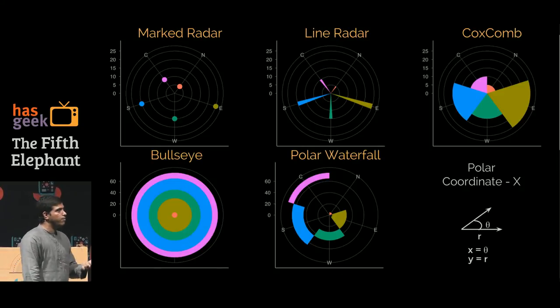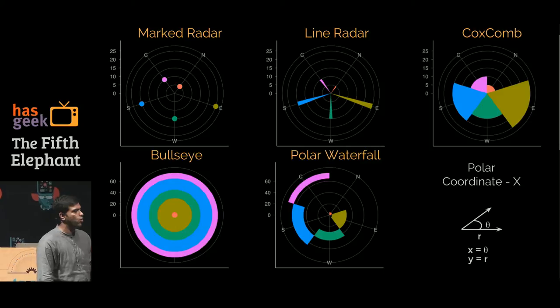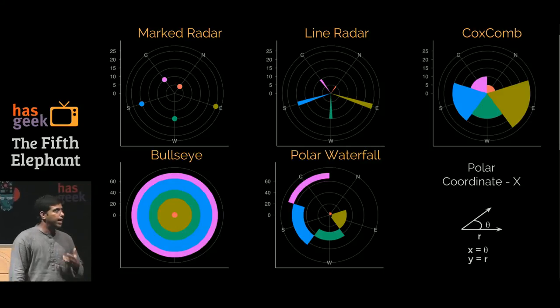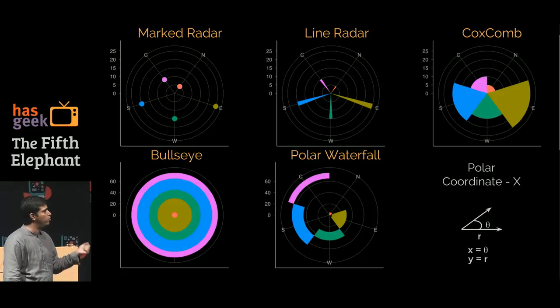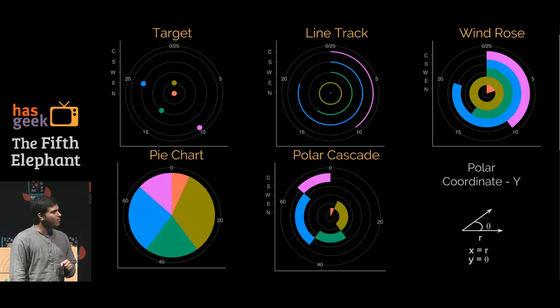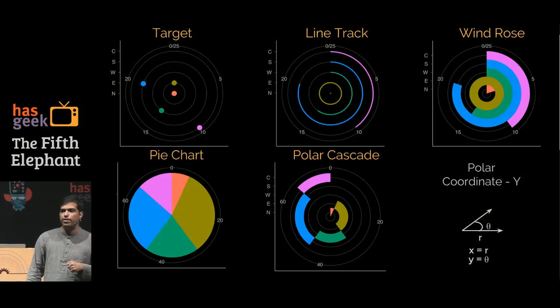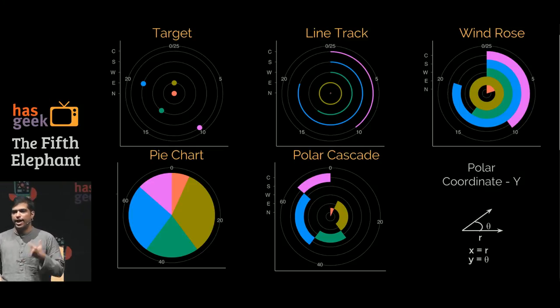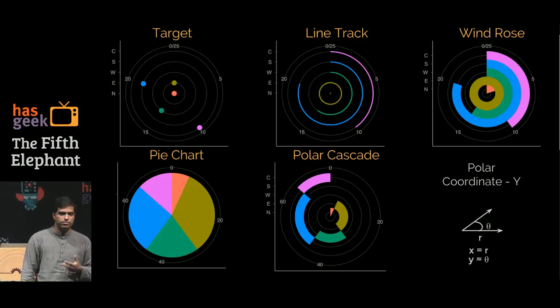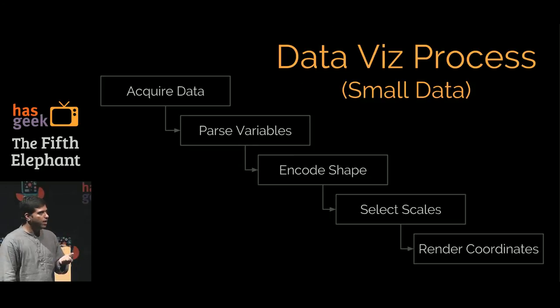I can then decide to do it on a polar coordinate and say X is theta, Y is now radius. I would get a mock radar, a line radar, COXCOM, a bullseye and a polar waterfall. Or flip the coordinate again and say X is now R and Y is theta, and I would get a target, a line track of windrows, a pie chart and polar cascade. Just with a simple application of this, I can come up with twenty different visualizations. This is the process of visualization.